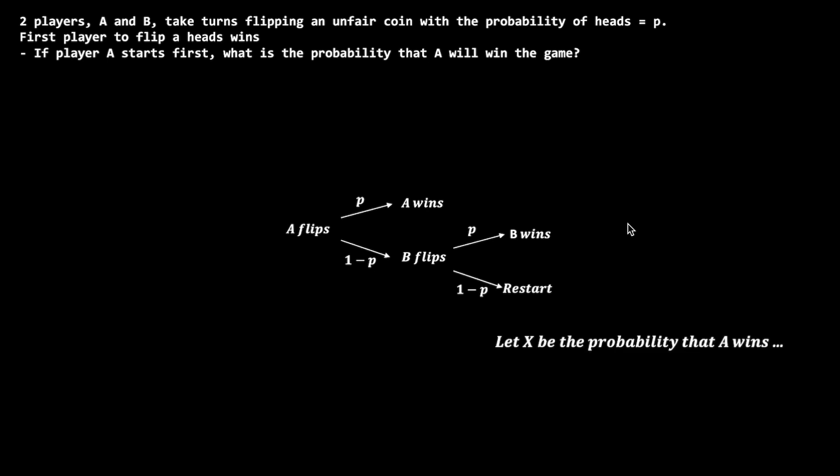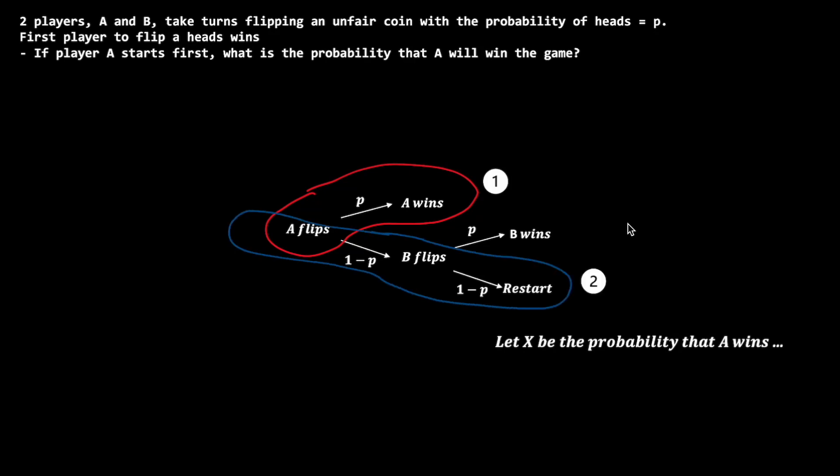Letting X be the probability that A wins when A flips, let's investigate how many paths there are for A to win. There is path 1: A flips, gets heads, and wins — associated with probability P. Alternatively, in path 2, A flips tails, then B also flips tails, and the game restarts with A having the same probability of winning, which is exactly X, what we are currently looking for.